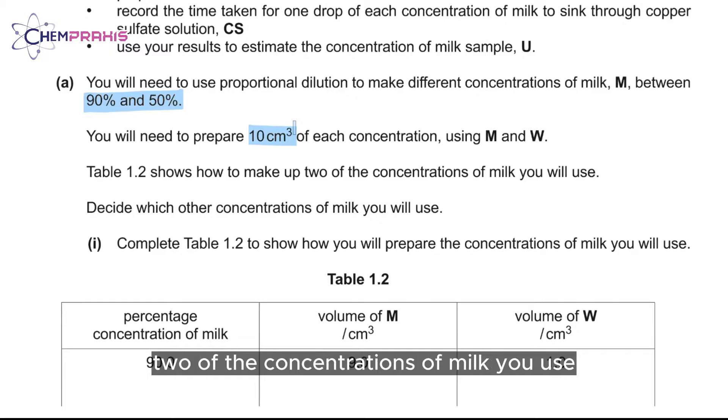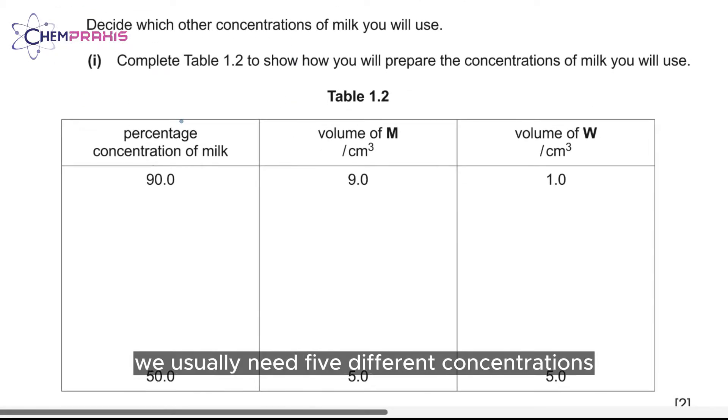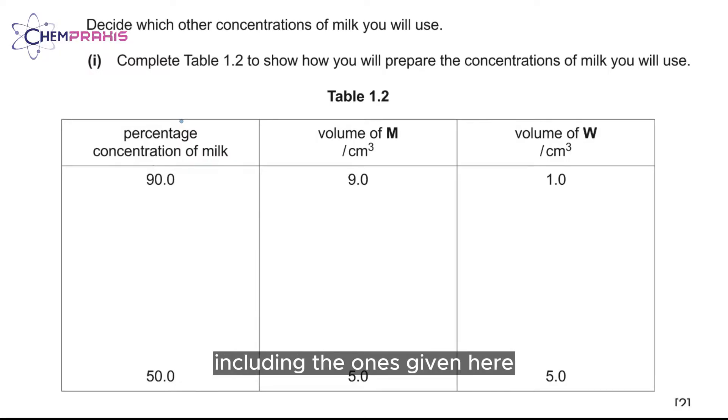Table 1.2 shows how to make up two of the concentrations of milk you'll use. For paper three, we usually need five different concentrations including the ones given. Here, we need to have five different concentrations with equal intervals. The concentrations that we'll use are 80%, 70%, and 60%.